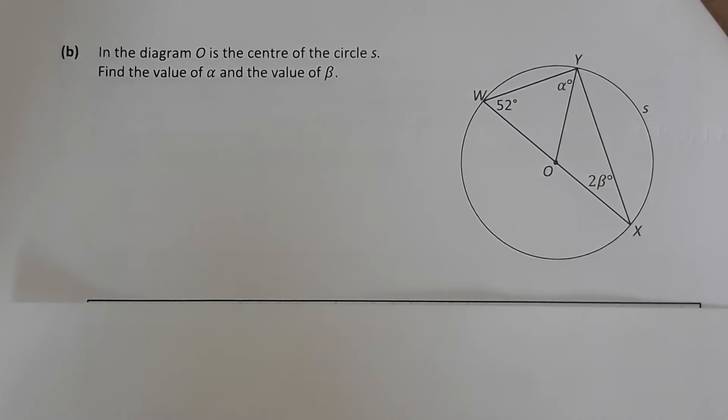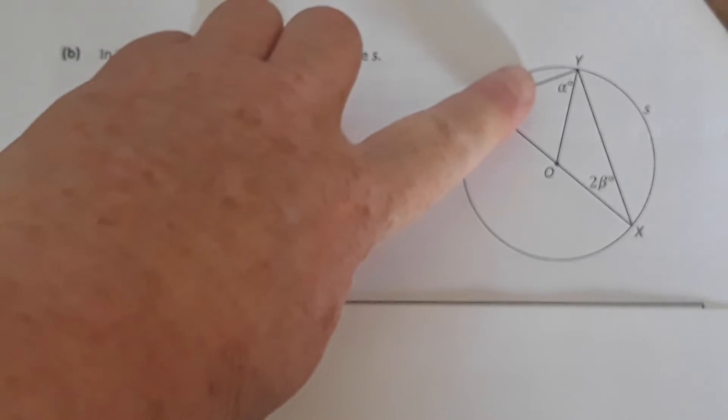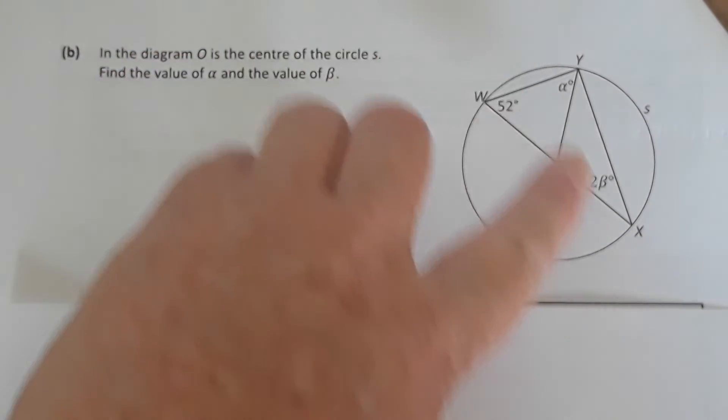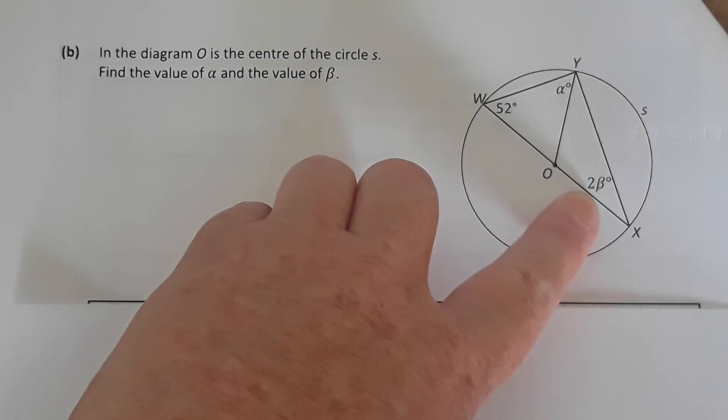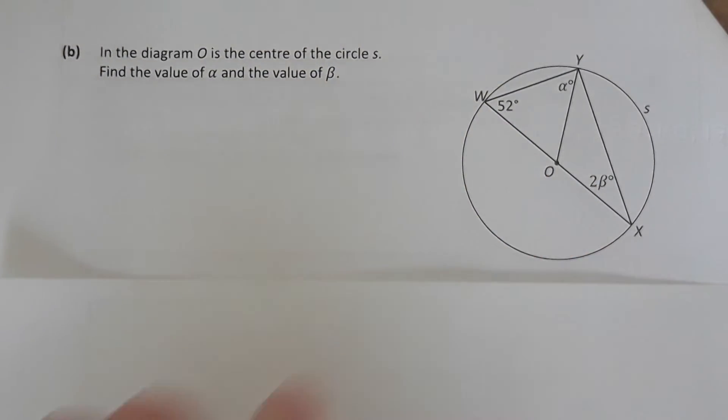Now part B. In the diagram, O is the center of the circle S, and they want you to find the value of alpha and beta. So alpha and beta. Now you have two beta here, but we'll get this in focus.